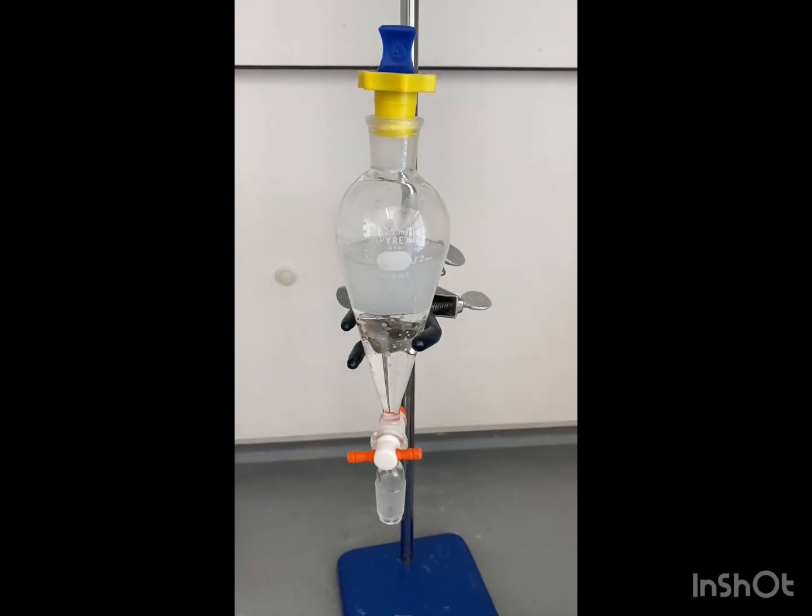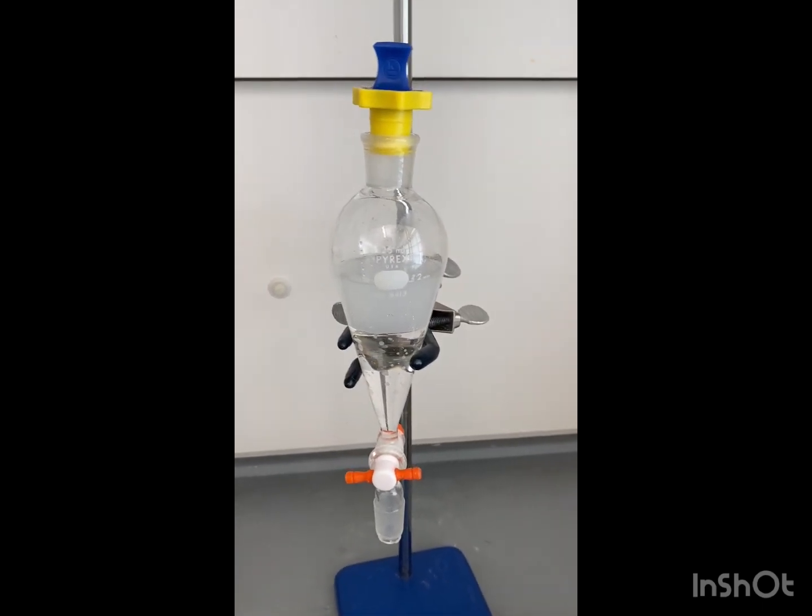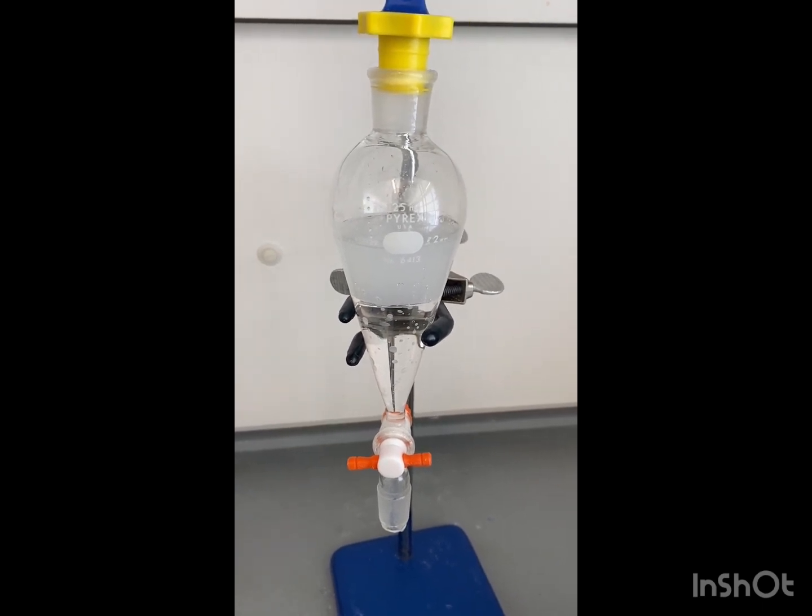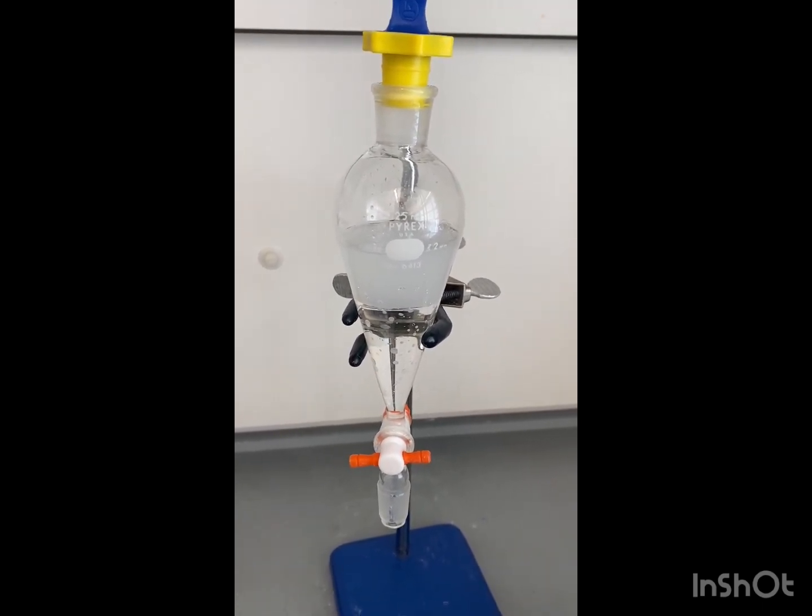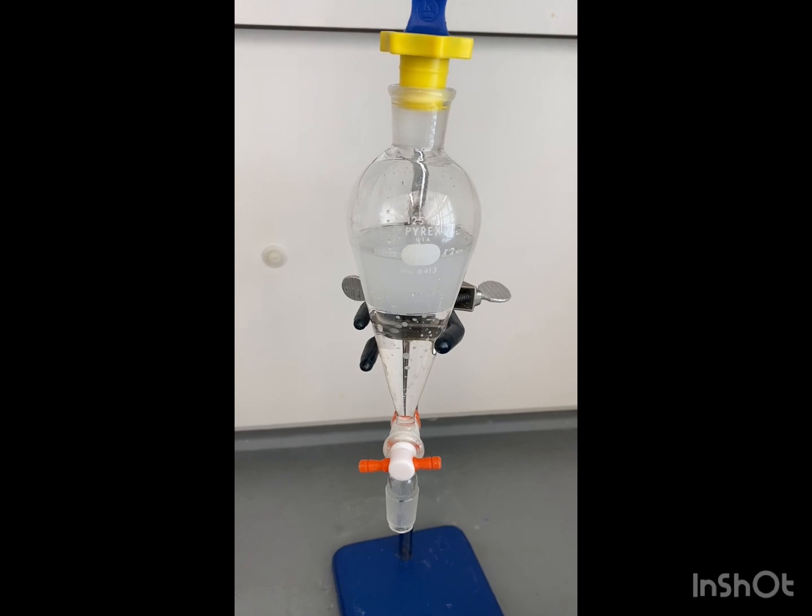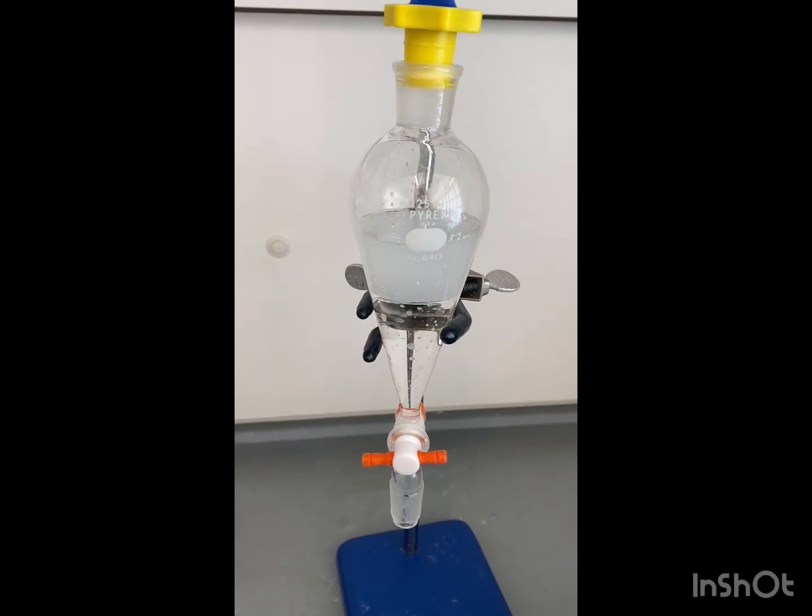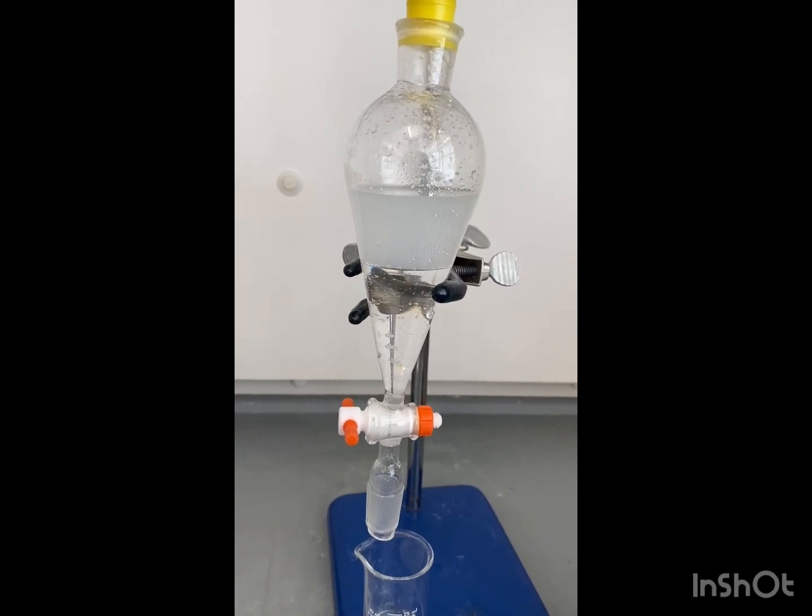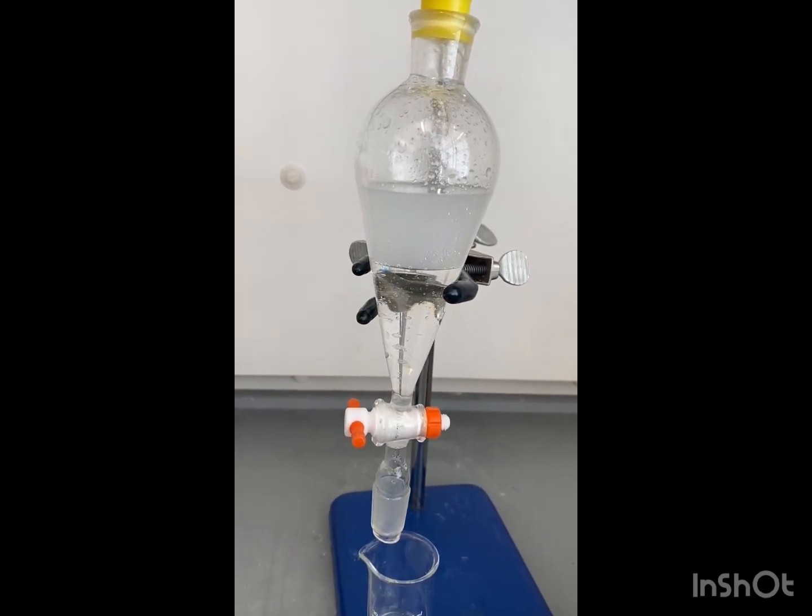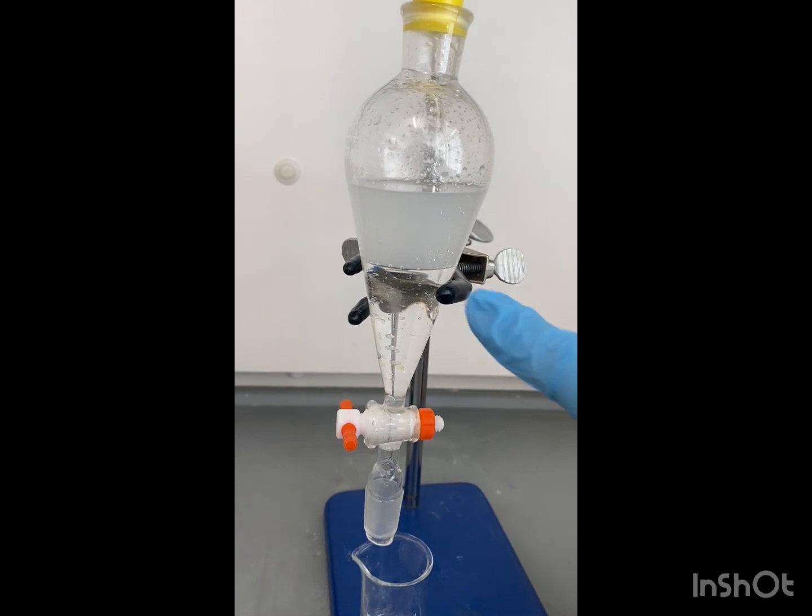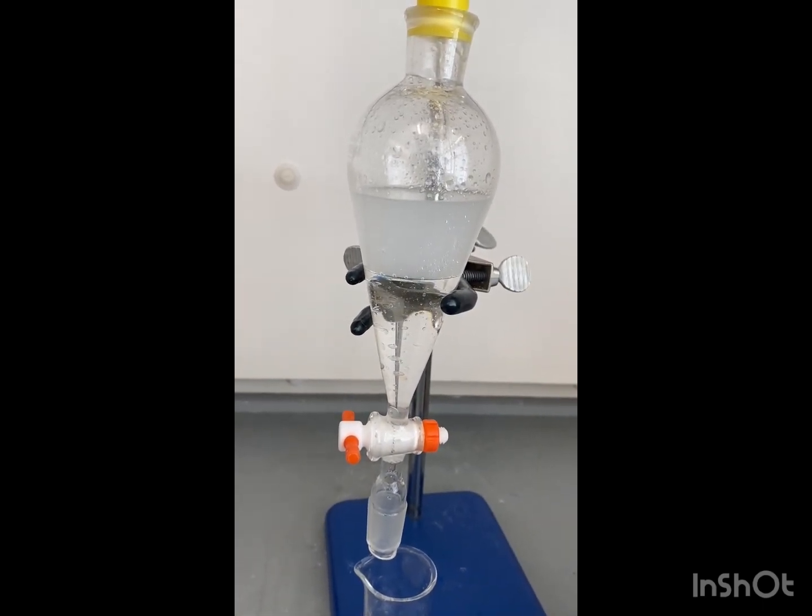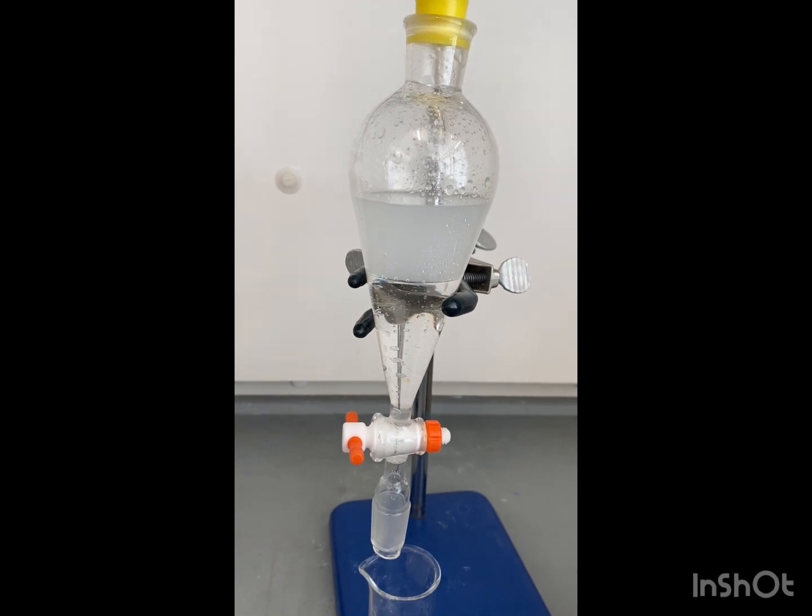Now we're going to separate the cinnamaldehyde from the water using DCM. So I added 40 ml of DCM into our separatory funnel along with our distillate that we got. Now that we have it mixed and we vented it, we are going to extract the organic layer and we're going to do this two more times.